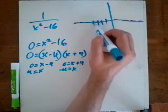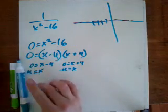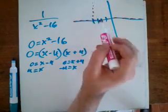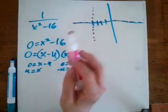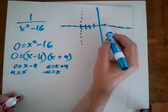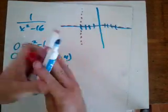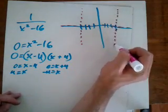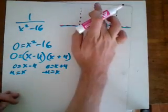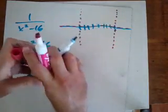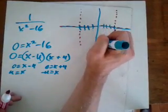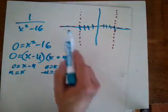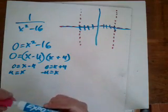So we'll put those asymptotes in. There's our negative 4, and then we need the other one at positive 4. Now we've got our horizontal and our two vertical asymptotes. That's the first two steps — get the horizontal, then you get the vertical. We've got those done.